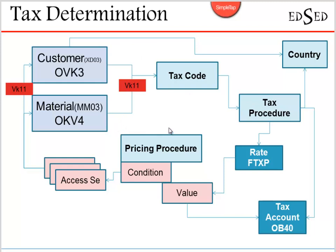The basic integration works as follows: when you are selling to a customer, his country is determined, and based on that country, the relevant tax procedure is invoked in SAP. This tax procedure also looks at the tax code determined from the customer and material combination.